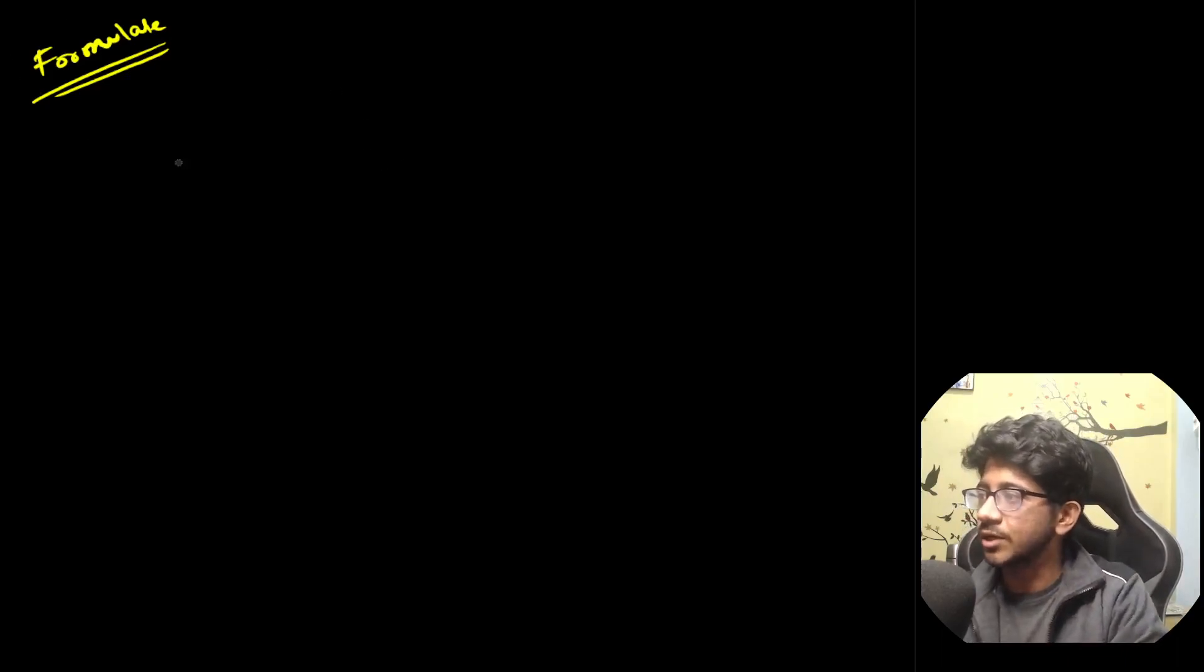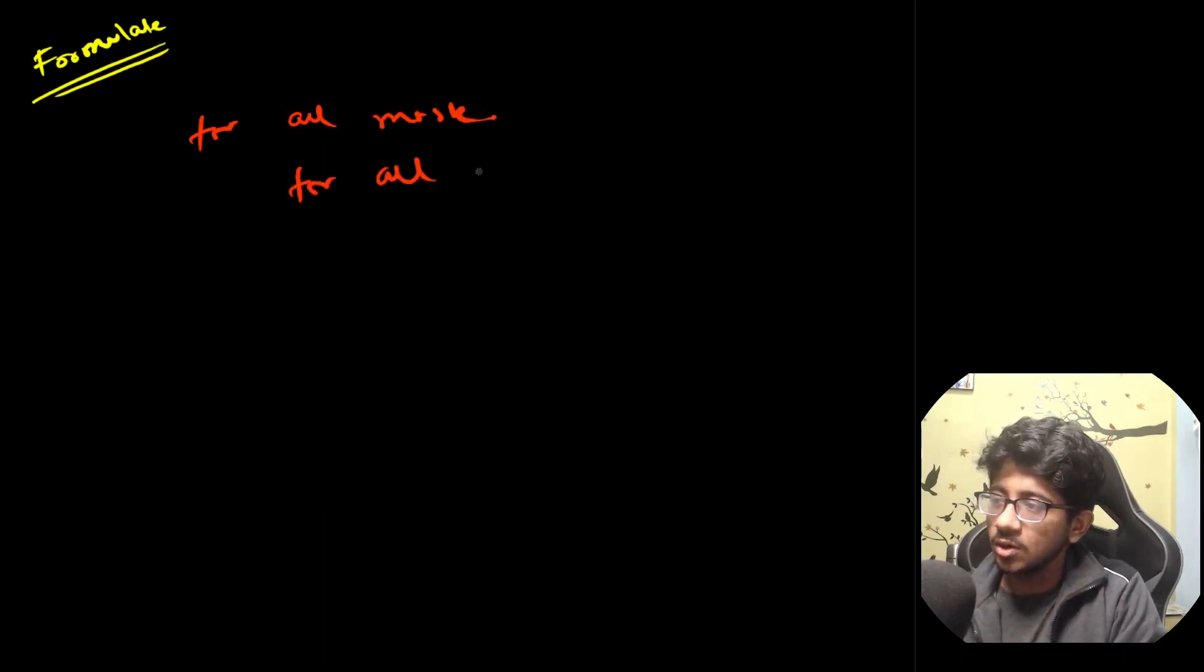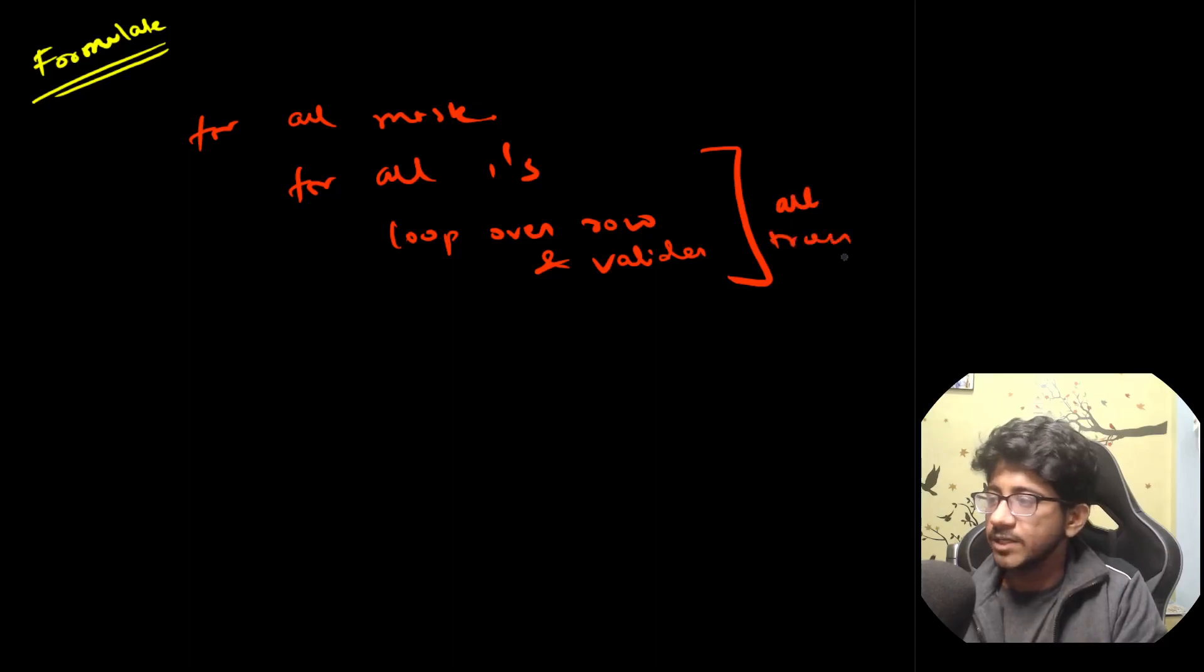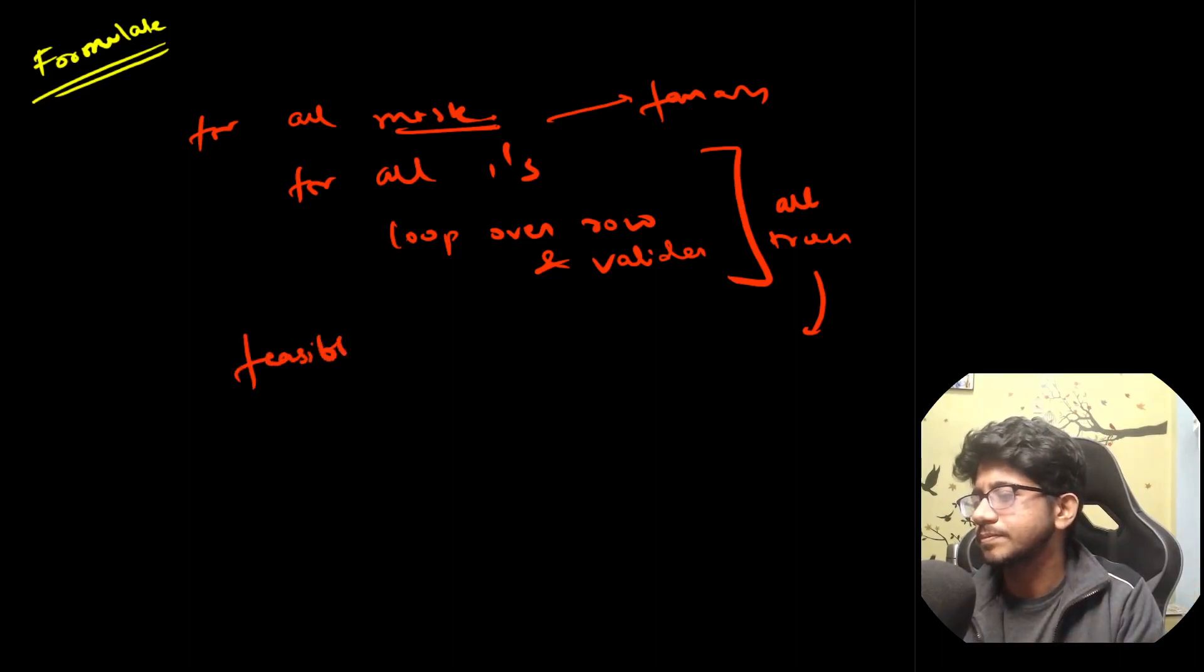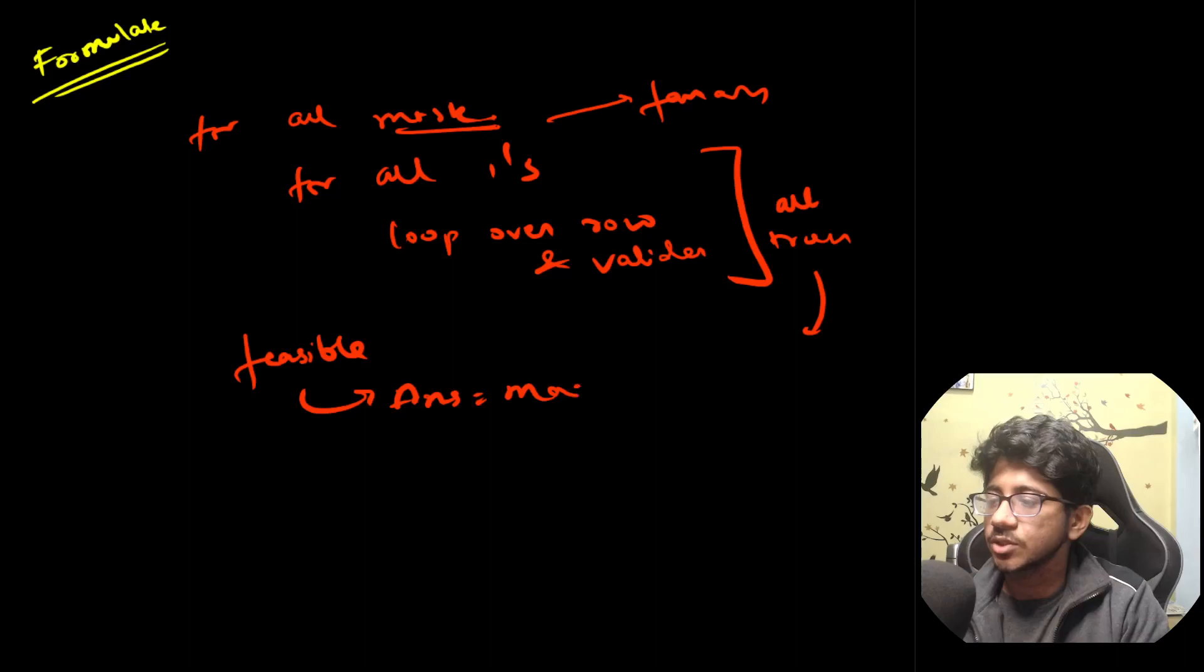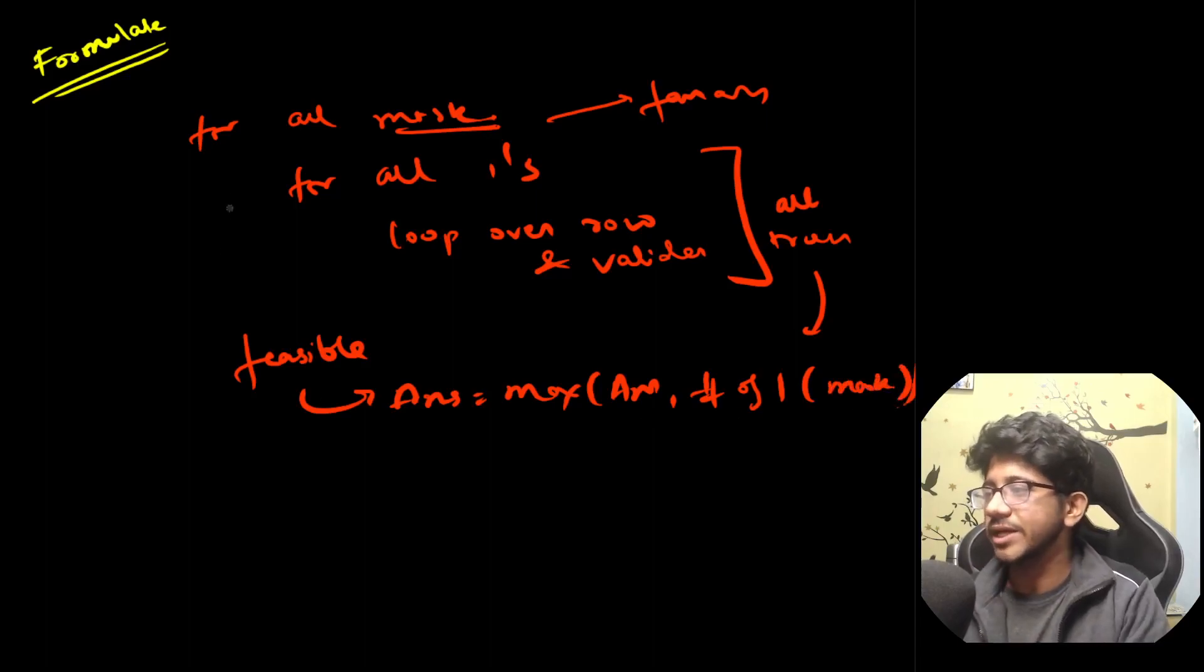So when we try to formulate now, we have a brute force kind of approach. We try every subset as a good set and the rest are bad. And then we try to solve the problem. So usually what we're going to do is for all masks, for all ones in the mask, what we're going to do is loop over row and validate. If all are true for all masks, then this mask is feasible. Or else not. If it's feasible, then we go ahead and answer equals max of answer comma number of ones in the mask, which you can easily find using built-in pop count stuff.